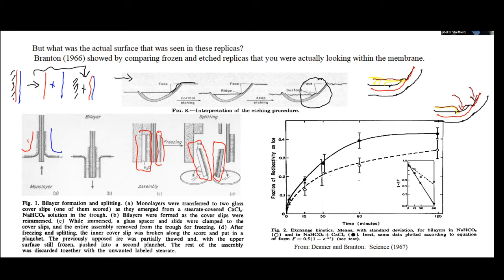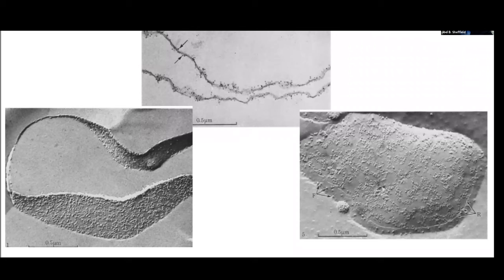And that was the experiment that Branton also did, the same Branton. And let me show you the result of that experiment. He played it in a very interesting way. What he did was, he said, let's take a red cell and do a freeze fracture of a red cell.